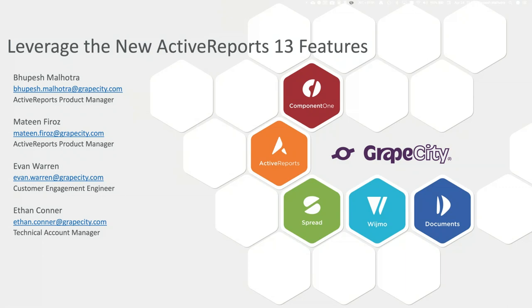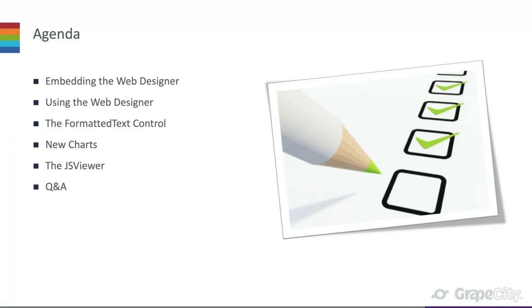Today we're going to look at the new stuff added with Active Reports 13. The bigger things we've added are the web designer — an end user designer you can embed in your web applications — along with the formatted text control and new charts. Then we'll look at the JS viewer, which is an enhancement from the HTML5 viewer in earlier versions, and we'll end with Q&A.